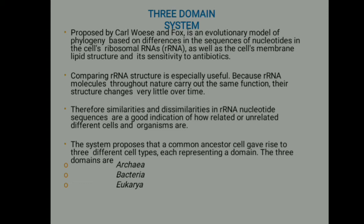The system proposed that a common ancestor cell gave rise to three different cell types, each representing a domain. The three domains are Archaea, Bacteria, and Eukarya.